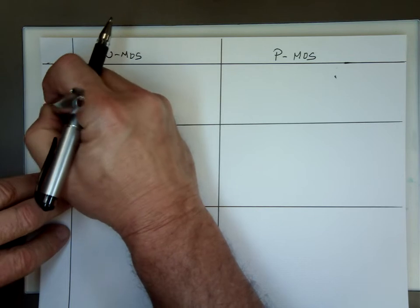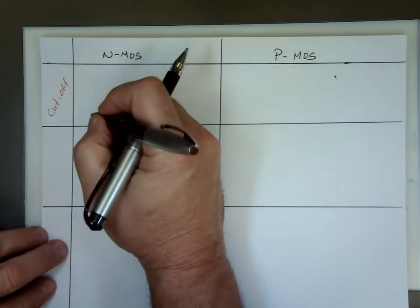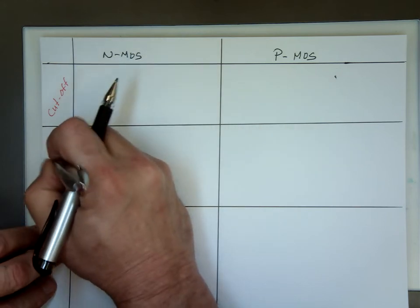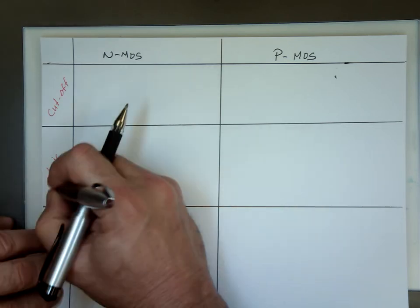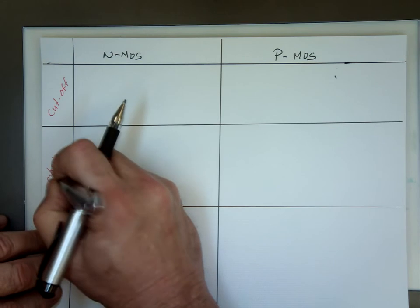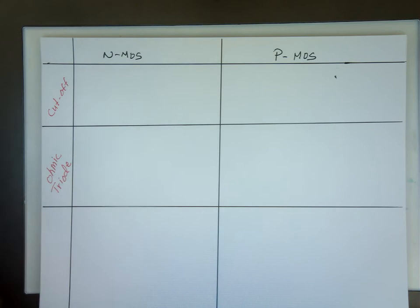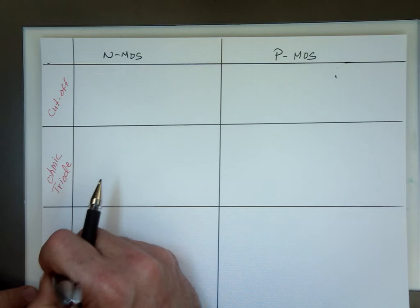So this section here, we are in linear, I mean, triode. This is the ohmic section. Sometimes we call that triode region, or linear, different names for it. And this is the saturation.